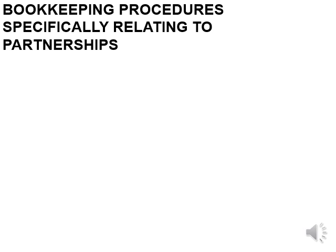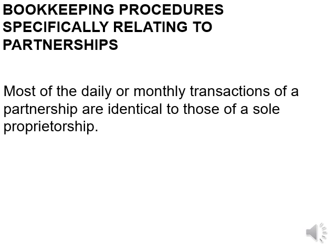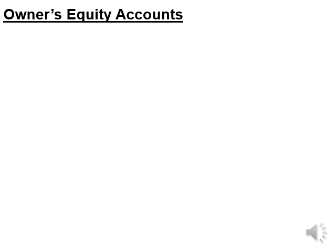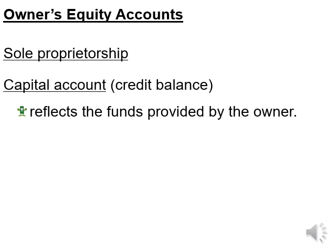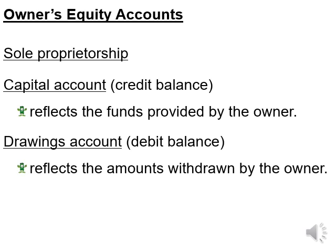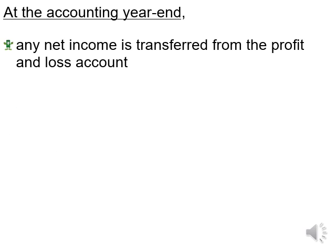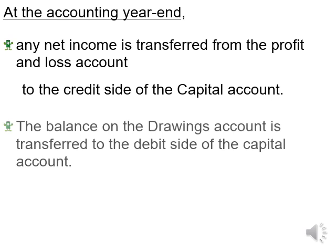Now let's look at the bookkeeping procedures specifically relating to partnerships. Most daily or monthly transactions of a partnership are identical to those of the sole proprietorship. The difference is in the owner's equity accounts. For a sole trader, the capital account has a credit balance reflecting funds provided by the owner. The drawings account has a debit balance reflecting amounts withdrawn by the owner. At year end, net income (profit) is transferred from the profit and loss account to the credit side of the capital account, and the drawings account balance is transferred to the debit side of the capital account as part of the closing transfers.